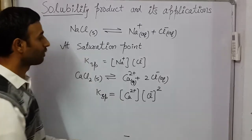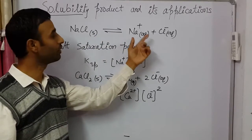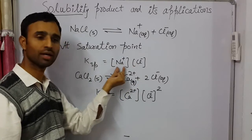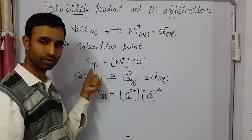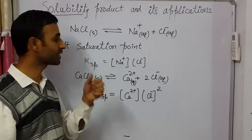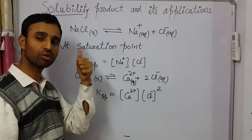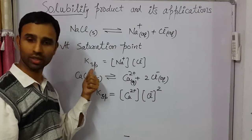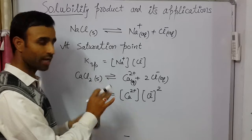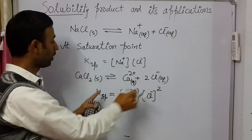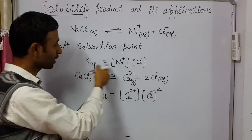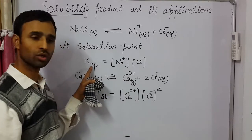Now, if before equilibrium we take the product of the ion concentrations — for example Na+ and Cl− — at any point other than equilibrium, that is called the ionic product. And at the saturation point, that ionic product becomes equal to the solubility product. The ionic product can be taken at any time; at the saturation point, or saturated solution, the product of the concentration of ions equals the solubility product.